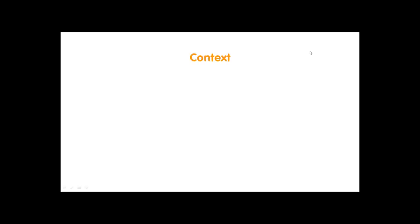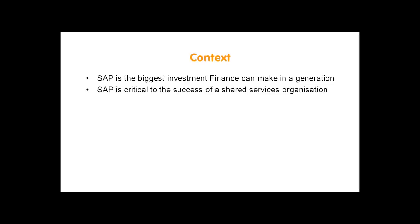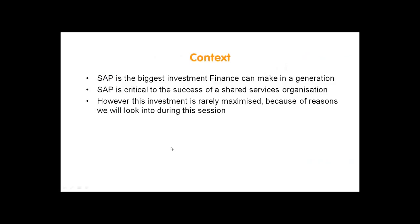Let's look at why we're actually having this debate today. When we do surveys to our membership community, we often find that SAP is the most widely used ERP among our members, often with a penetration of between 60 and 70 percent. It is generally assumed that the ERP investment of SAP is the biggest investment that finance makes within a generation. SAP is absolutely critical to the success of shared services, and they're often rolled out very much in proximity with each other — either SAP first and then shared services, or both hand-in-hand as joint projects.